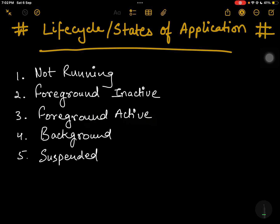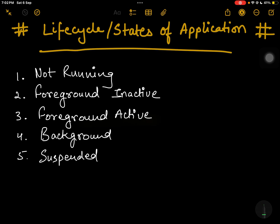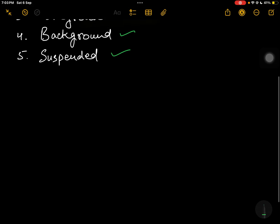Hello all, welcome to the channel. Today we are going to discuss a basic interview question you could be asked, like what is the state of the application, how many states the application can have, or the life cycle of an application. You have to tell the interviewer about a basic cycle that the app follows from its not running state to the suspended or background state. The app has basically five states: not running, foreground inactive, foreground active, background, and suspended.